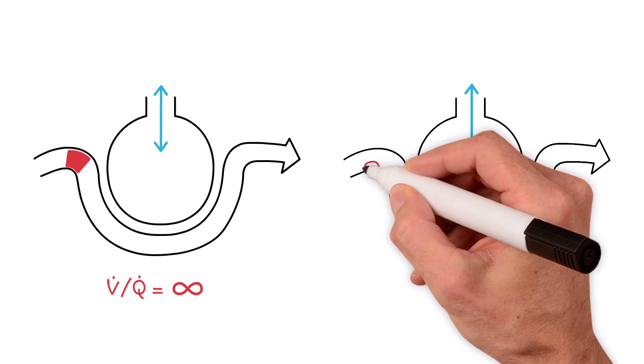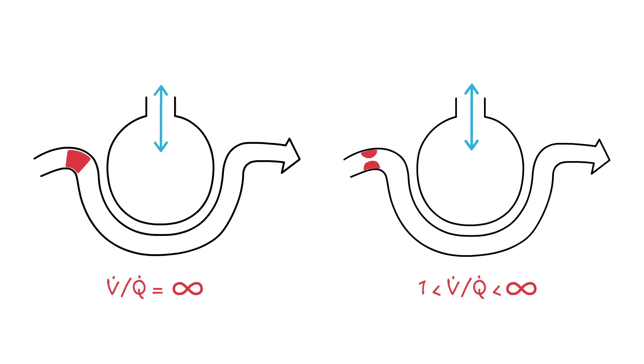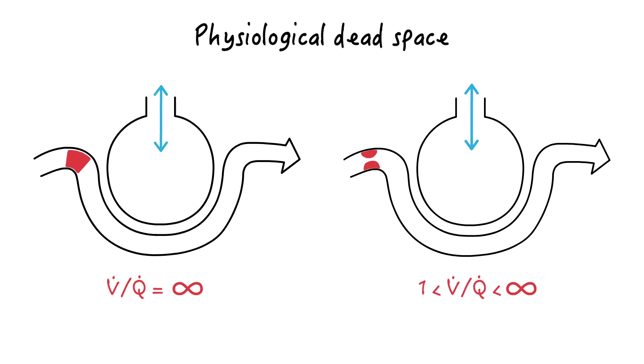Conceptually, any alveolar units with V/Q greater than 1, but not infinity, can be described as if the units were functionally equivalent to areas of dead space. Areas of high V/Q or physiologic dead space represent regions of wasted ventilation as far as carbon dioxide elimination is concerned.